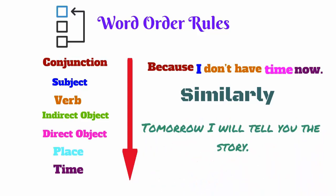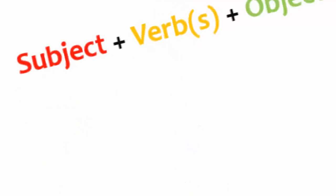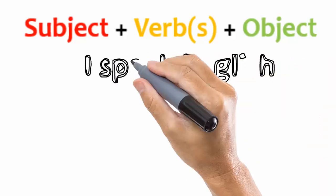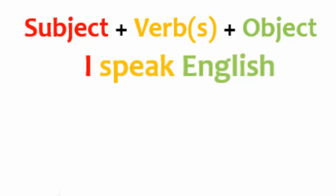Let's take a look at some of the basic structures for sentences. The simplest one is subject, verb, and then object. For example, I speak English.